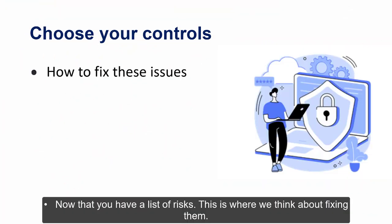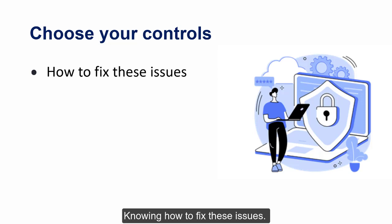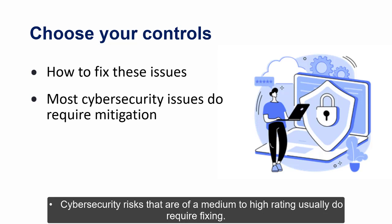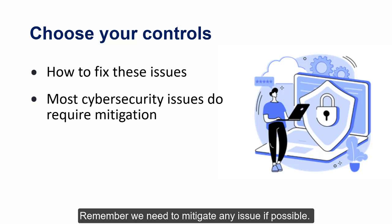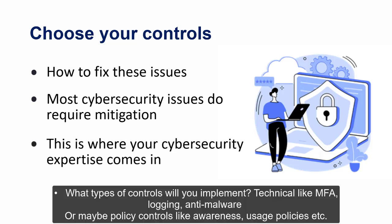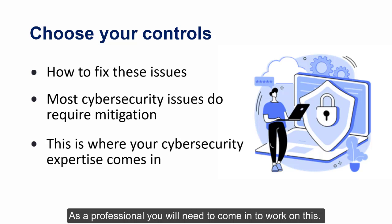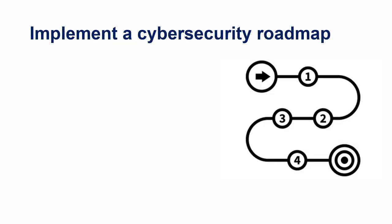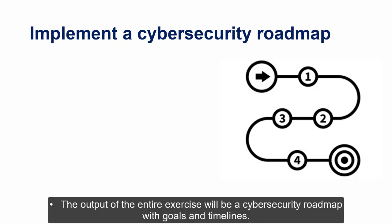Follow the steps discussed earlier and identify the key risks using all the concepts we have learned. One of the easiest ways to find risks is to ask the asset owner — if they realize you are there to help them secure their systems, they will happily give you useful information. Now that you have a list of risks, think about fixing them. Cybersecurity risks of medium to high rating usually require fixing. What types of controls will you implement? Technical controls like MFA, logging, anti-malware, or policy controls like awareness and usage policies.